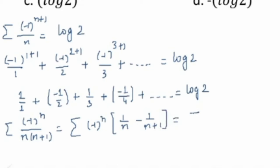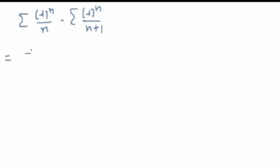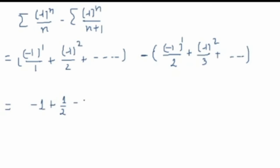And just play smart and write it down like this: minus one raised to the power n upon n plus one. This is minus one raised to the power one upon one minus one squared upon two and so on, minus minus one raised to the power one upon two, this time minus one squared upon three and so on. This will be minus one plus one by two minus one by three plus one by four and so on.